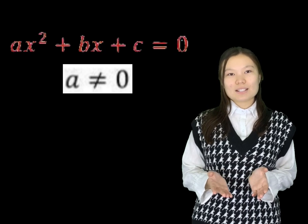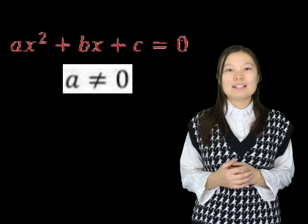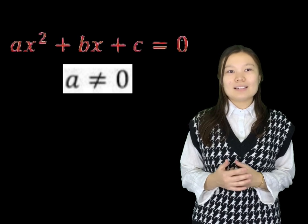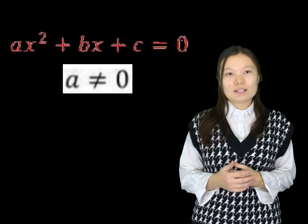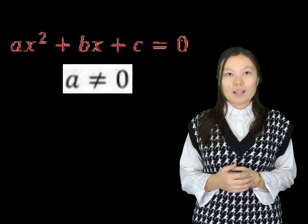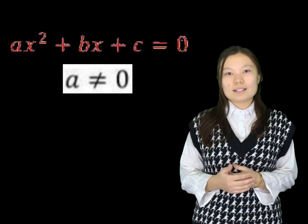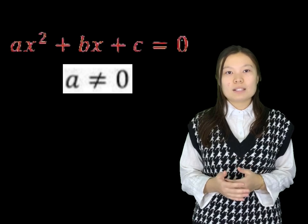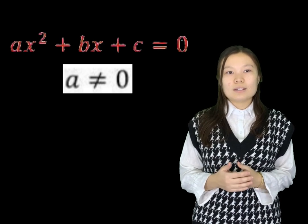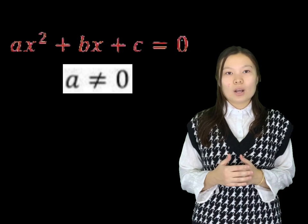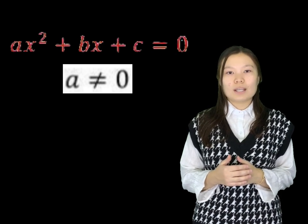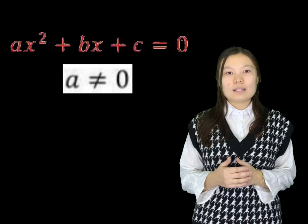Dear students, ax squared is the leading term of a square trinomial. 'a' is the leading coefficient, so a can never be equal to zero. The reason is that the leader 'a' should not stop its development — it will either go down or up. The main thing is not to get stuck in one place.